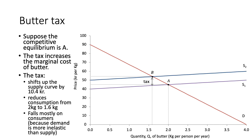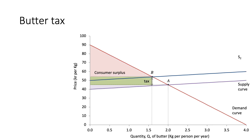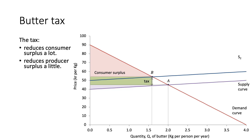The burden in this case falls mostly on consumers. Looking at the curves, S1 and S2 are both relatively elastic, whereas the demand curve relative to the supply curves is much more inelastic. Given this, most of the burden of the tax falls on consumers. The tax cuts deeper into consumer surplus because of the relative elasticity of the curves. The demand curve is more inelastic relative to the supply curve, so the burden falls on consumers, with only a much smaller reduction in producer surplus.